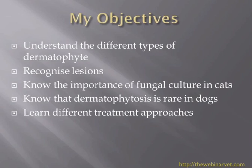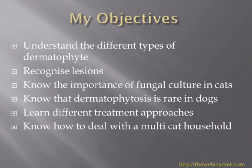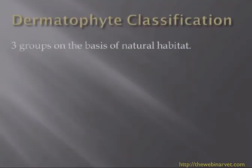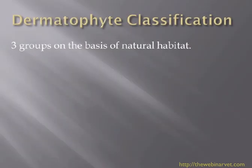I'd like to go through some of the different treatment approaches, and there are different ones depending on the situation in the household. Is it a single cat? Are there multiple cats? A dog would be treated differently from a cat, and so on. I will want to spend some time on the multi-cat household or cattery-type situation.